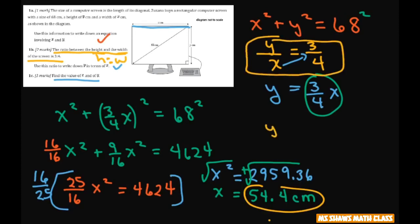So we have y is to 54.4 as 3 is to 4. And cross this up and multiply and then divide by 4. So 3 times 54.4 divided by 4 equals your y.